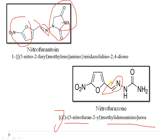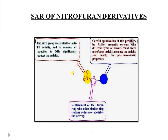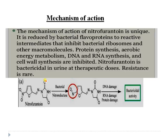Regarding structural activity relationships of nitrofuran derivatives: the nitro group is essential for biological activity and must be at the fifth position; it is also important for anti-TB activity, and reduction to an amino group significantly reduces biological activity. Replacement of the furan ring with any other similar ring system reduces or abolishes antibacterial activity. Careful optimization of the periphery by substituting the aromatic system with different linkers can lower nitrofuran toxicity, enhance activity, and modify pharmacokinetic properties.